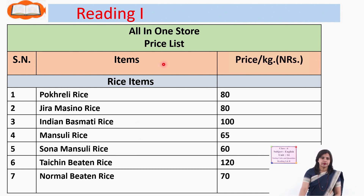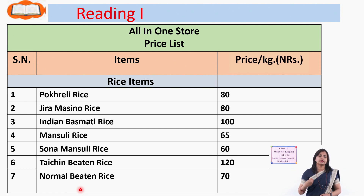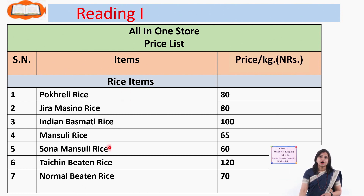There is a price list. Under items, there are different varieties of rice. Even rice has different varieties — the one you eat is not the only type. Some rice has a good smell, some have very long grains, and some have thicker ones. They are named according to those characteristics. Here are the different varieties of rice available in this shop, along with their prices.